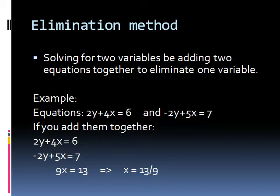Well, let's look at the example below. So now if we are given the equation 2y plus 4x equals 6 and minus 2y plus 5x equals 7. If we were to ask to find what are the solutions for x and y, we could add them together. So if we add them together, 2y plus minus 2y would cancel the y's out, right?